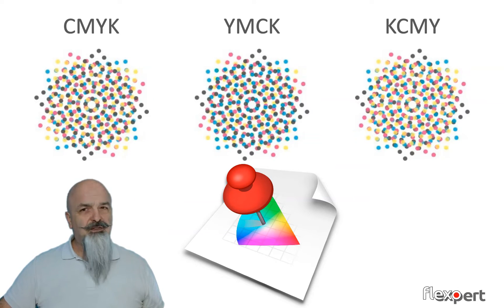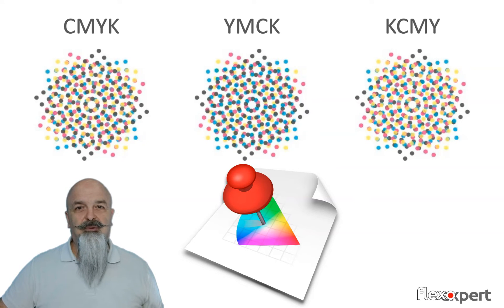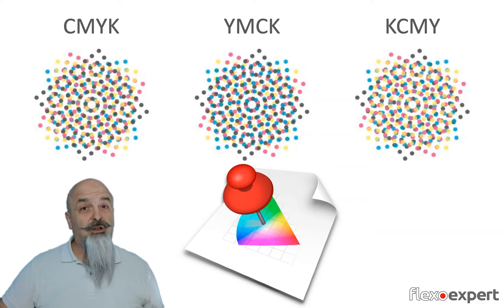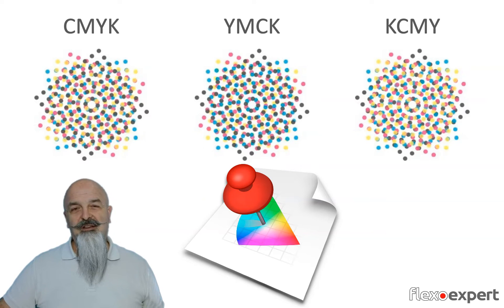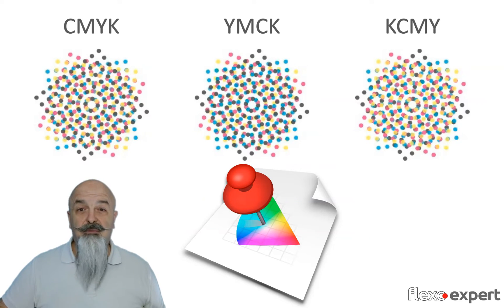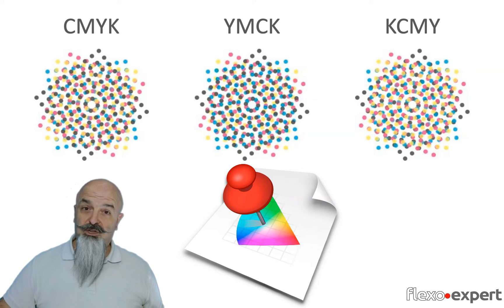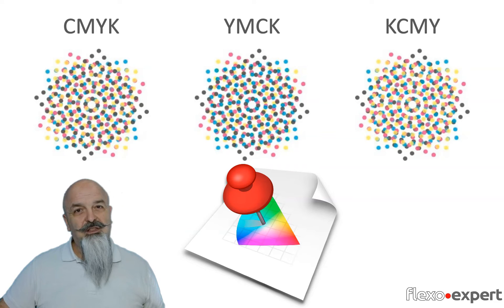Thus, the printed result will not be predictable. Color proofs will not match because they refer to a different printing condition — they are simulating a condition that is not the one that we have on press.